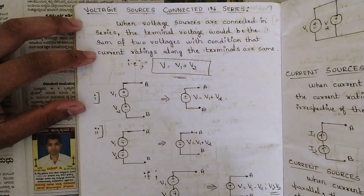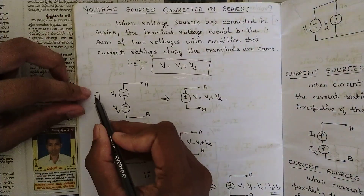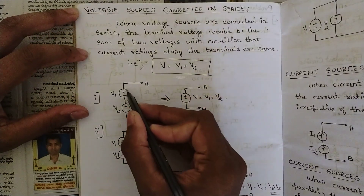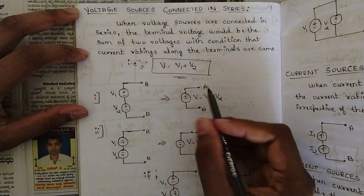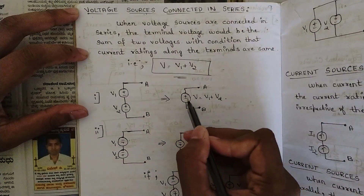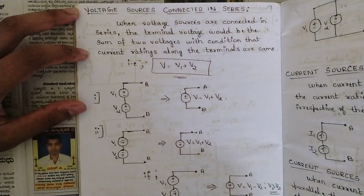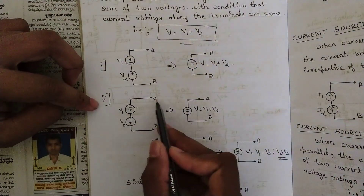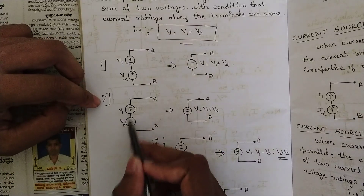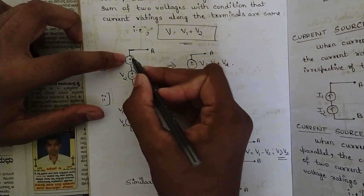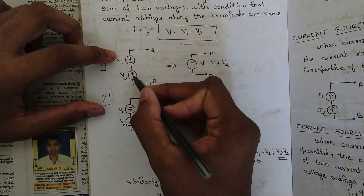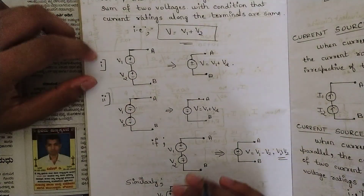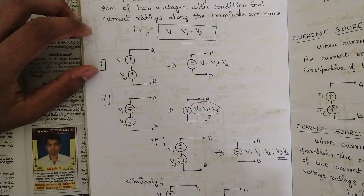That is, V = V1 + V2. Here we have a simple circuit between two terminals with the two voltage sources in series. In order to reduce this to a single voltage source we should be adding them up, giving V = V1 + V2. This is in the case of plus-minus polarity. Similarly, in the case of minus-plus, when the two polarities are of the same kind — no change — we can directly add them.